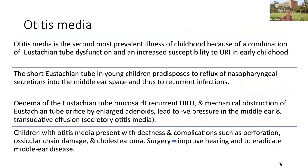Otitis media is very common in childhood due to eustachian tube dysfunction and increased susceptibility to URI in early childhood. The short, straighter eustachian tube in young children predisposes to reflux of nasopharyngeal secretions into the middle ear space, leading to recurrent infections. Edema of the naso-eustachian tube mucosa and mechanical obstruction of the eustachian tube orifice by enlarged adenoids leads to negative pressure in the middle ear, resulting in transudative effusion and secretory otitis media. Children present with deafness and complications such as perforation, ear discharge, ossicular chain damage, and cholesteatoma.